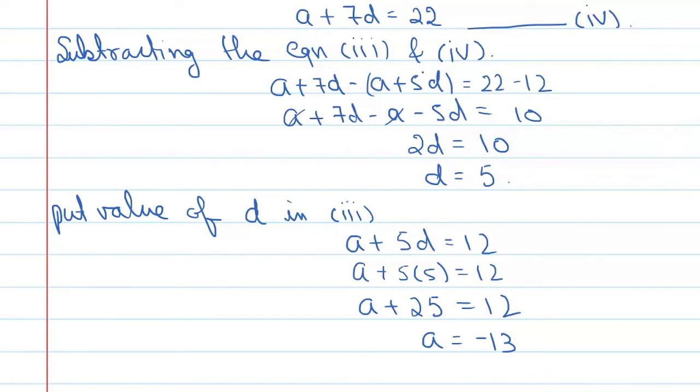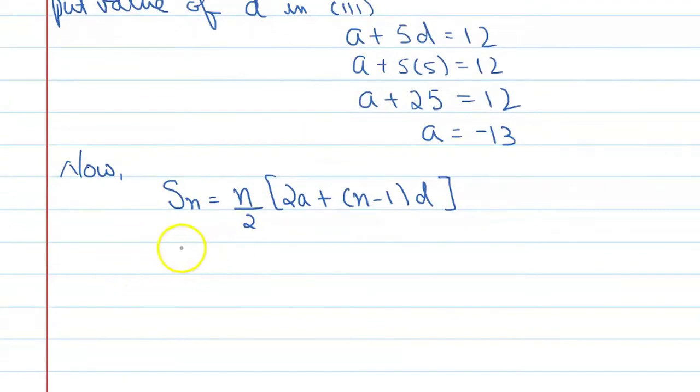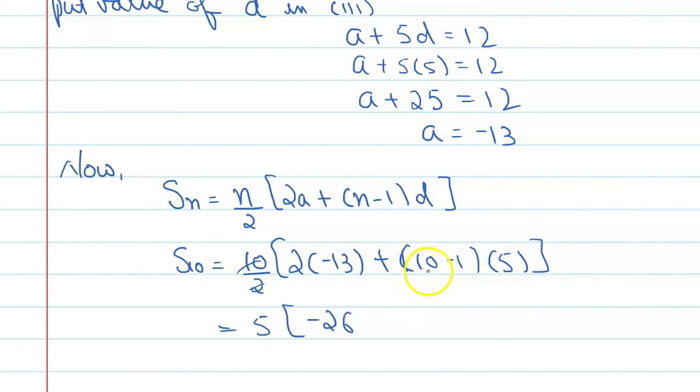Sum of n terms is equal to n upon 2 times (2a plus (n minus 1) into d). Now, we have S10. Sum of 10 terms is equal to 10 upon 2 times (2 times minus 13 plus (10 minus 1) times 5). So, after cancelling this, we will get 5 and this will become minus 26. This will become 9 times 5.